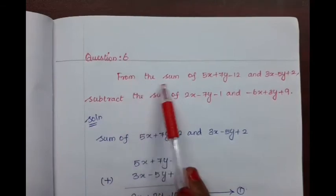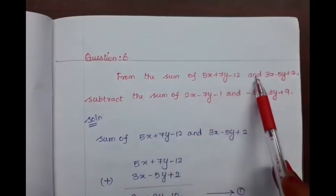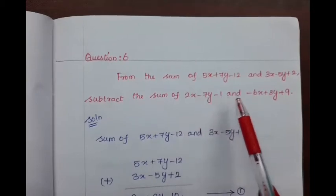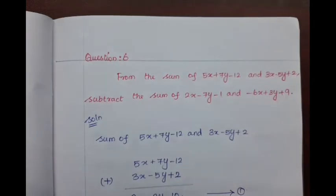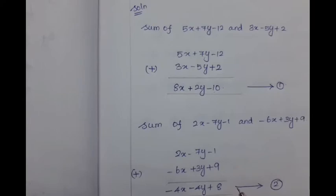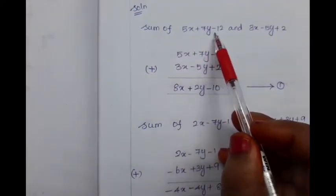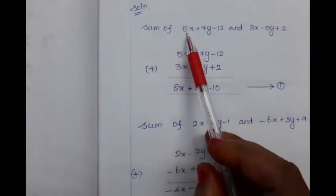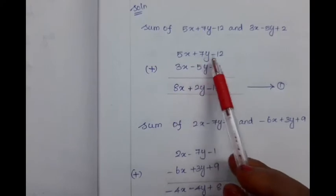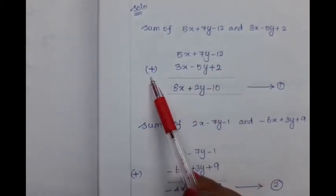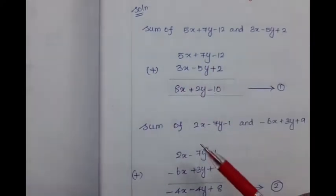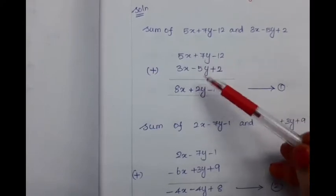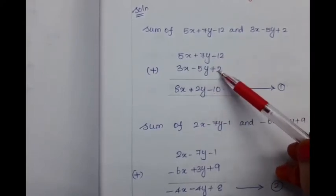Question number 6: From the sum of 5x plus 7y minus 12 and 3x minus 5y plus 12, subtract the sum of 2x minus 7y minus 1 and minus 6x plus 3y plus 9. For finding the required answer, we need to find the sum of 5x plus 7y minus 12 and 3x minus 5y plus 2. Adding 5x with 3x we get 8x. Adding 7y minus 5y we get 2y. Adding minus 12 with 2 we get minus 10.